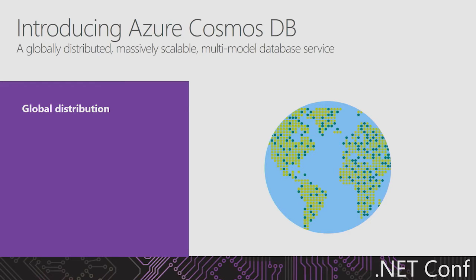So what does Cosmos DB provide to you as an application developer? Number one is global distribution. Azure has the biggest footprint of regions among any cloud provider. You can provision your web services and cloud services in any of 40-plus geographic regions, including sovereign regions. With Cosmos DB, you can associate any subset of these regions with your account — one region, two regions, or up to 40-plus regions — and the service seamlessly performs replication. The service also provides multi-homing APIs within all SDKs, including the .NET SDK, so your app can talk to the endpoint closest to it.